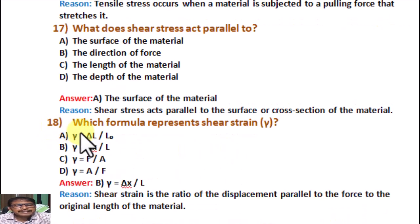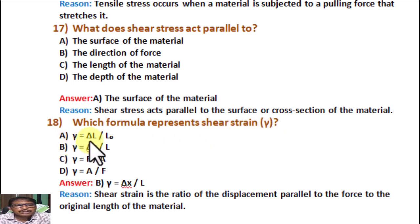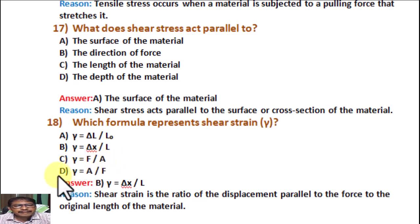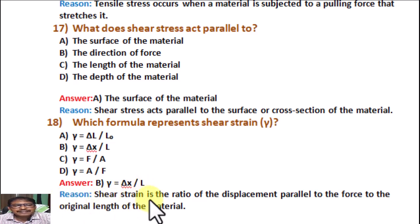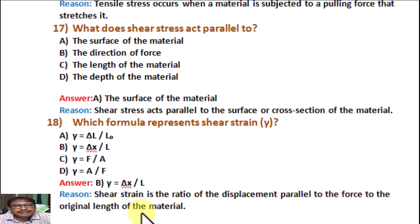Question number 18. Which formula represents shear strain gamma? A: gamma = ΔL / L₀. B: gamma = ΔX / L. C: gamma = F / A. D: gamma = A / F. Correct answer is B: gamma = ΔX / L. Reason: Shear strain is the ratio of the displacement parallel to the force to the original length of the material.